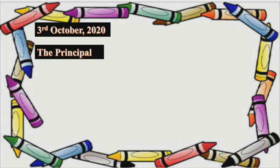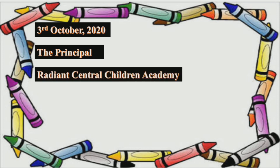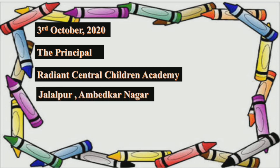So we will write 'The Principal.' Now tell me: what is the name of your school? Yes — the name of your school is Radiant Central Children's Academy. You have to write the name of your school. After that, write the location. Our school is located in Jalalpur, Ambitkanagar.